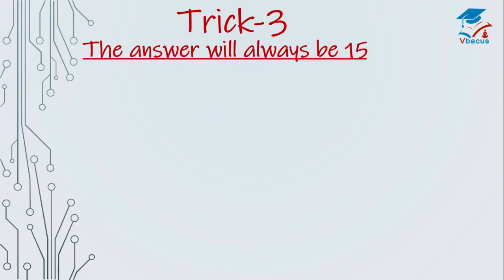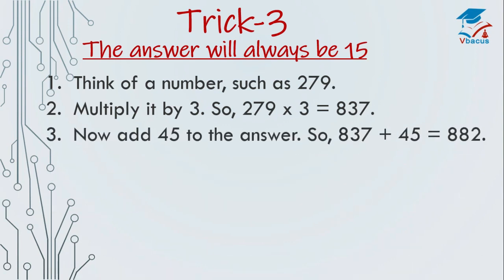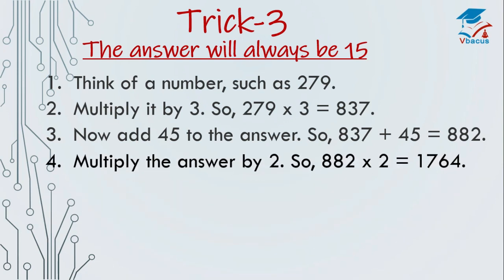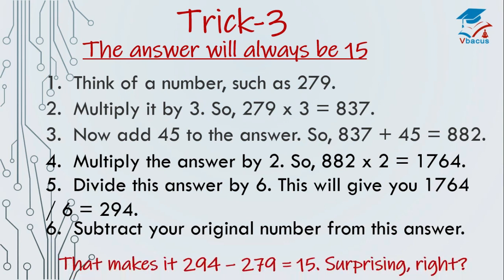Trick 3, the answer will always be 15. Think of a number such as 279. Multiply it by 3. So 279 times 3 will become 837. Now add 45 to the answer. So 837 plus 45 that is 882. Multiply the answer by 2. So 882 times 2 will become 1764. Divide this answer by 6. This will give you 1764 divided by 6, that is 294. Now subtract your original number from this answer. That makes it 294 minus 279 is equal to 15. Isn't it surprising?